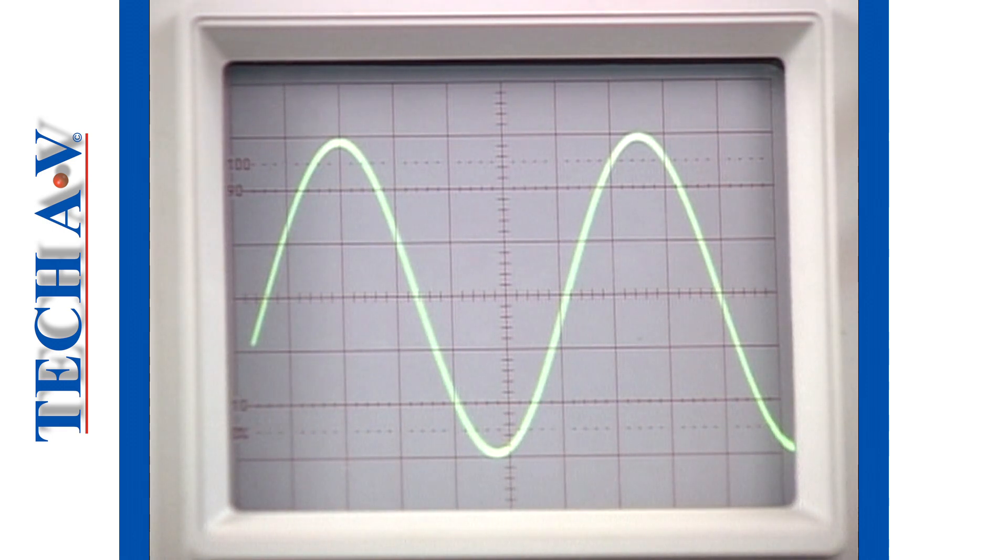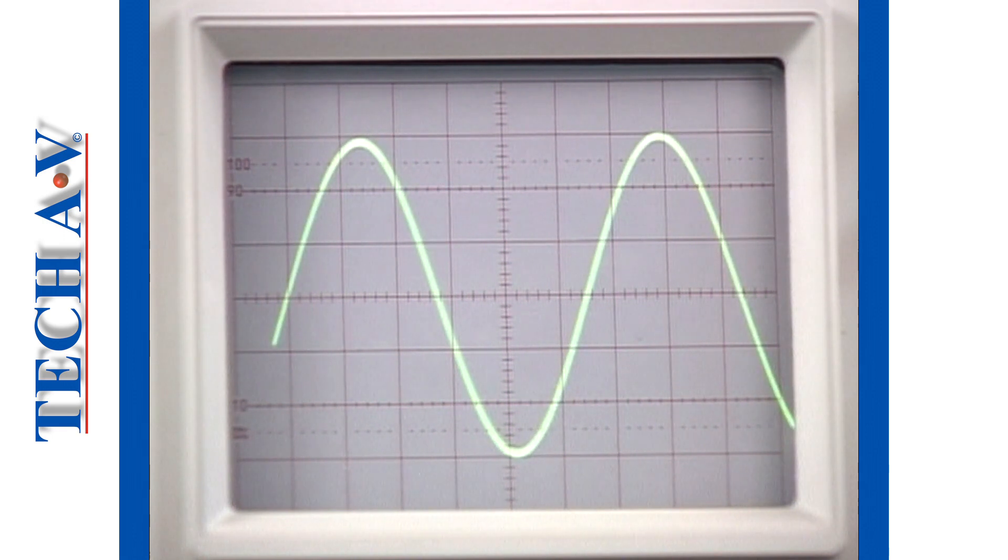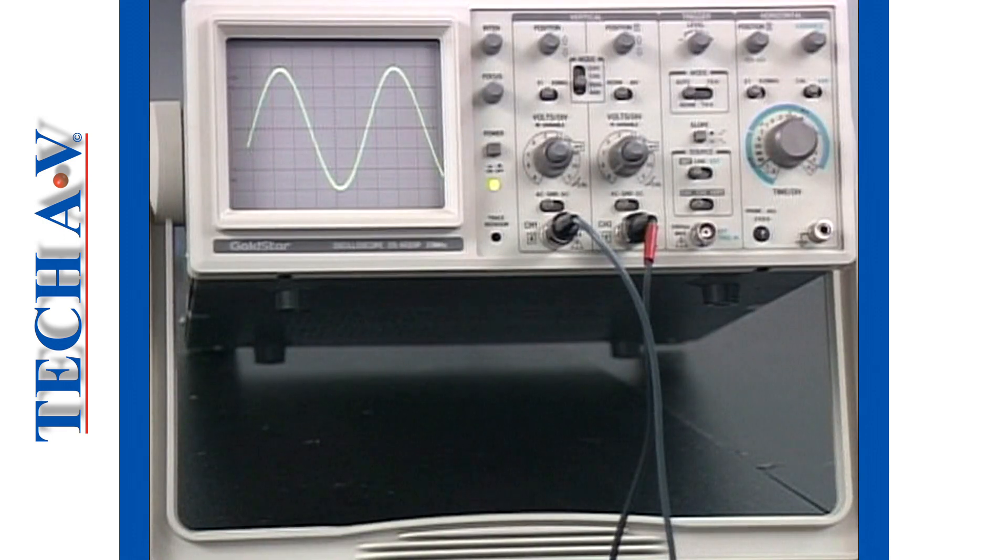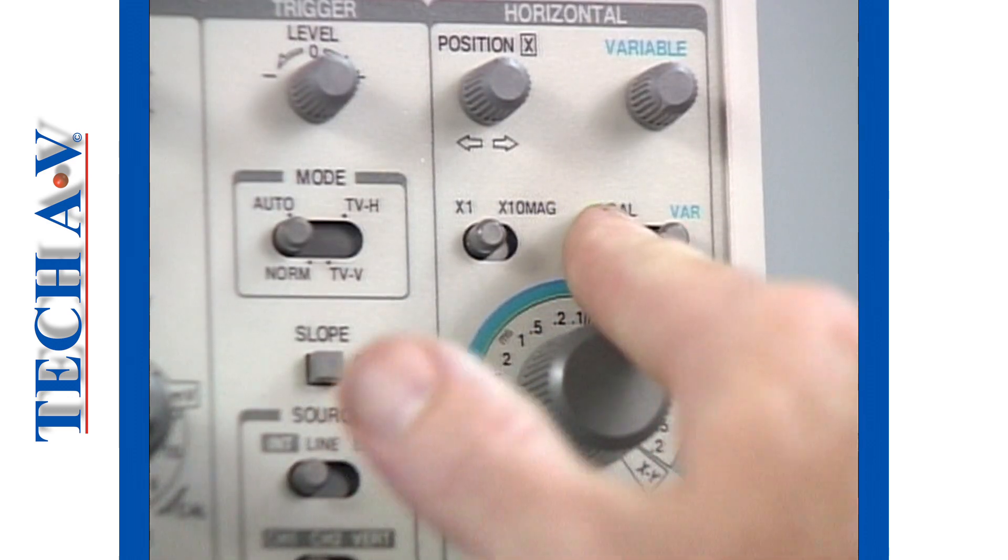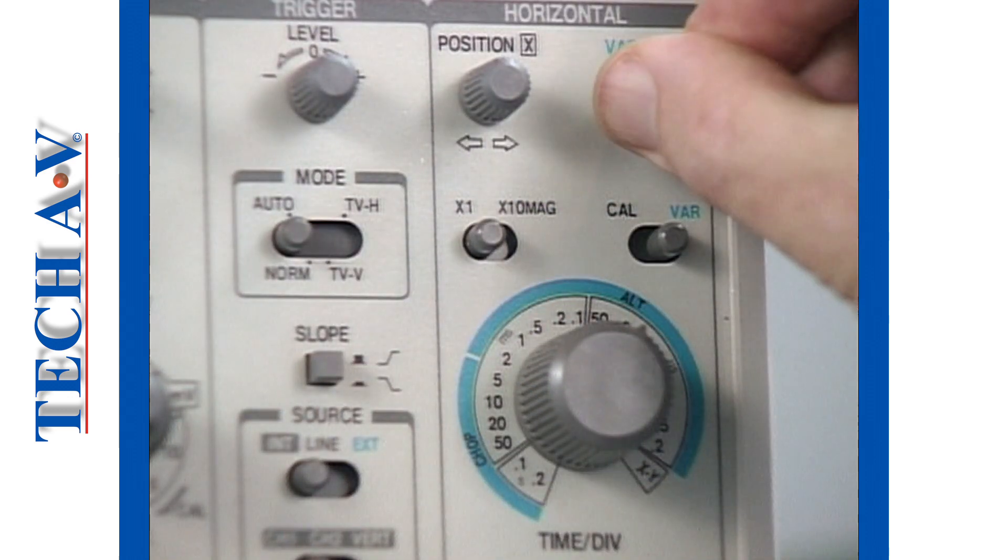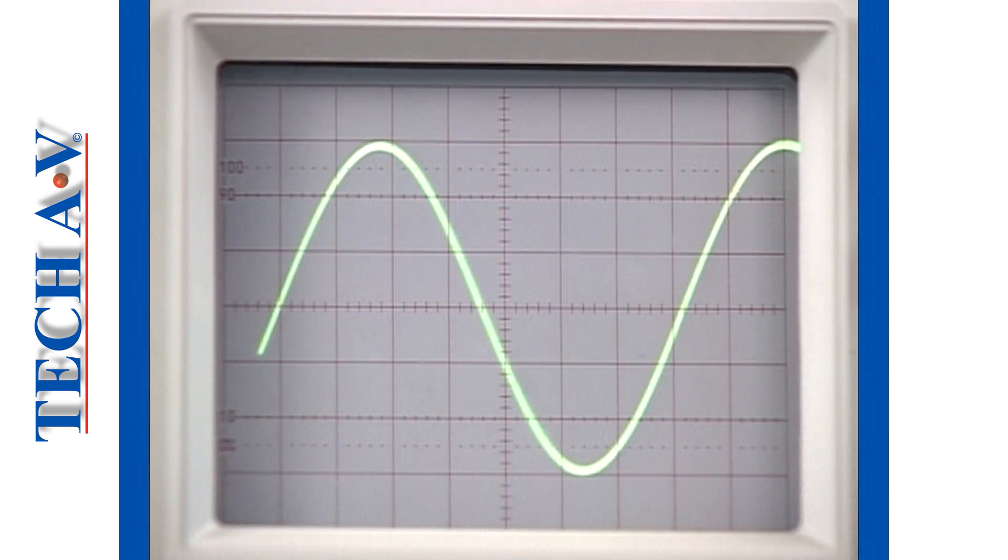Position the start of a cycle on a suitable vertical graticule line as shown. Using the time per division control, together with the variable control, adjust the period of the signal to span exactly 7.2 horizontal divisions. This sets up channel 1 as the reference trace.